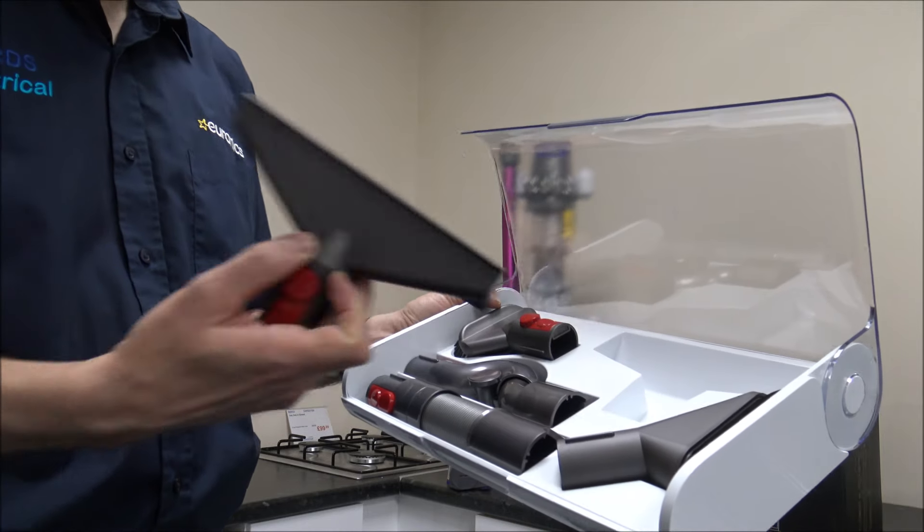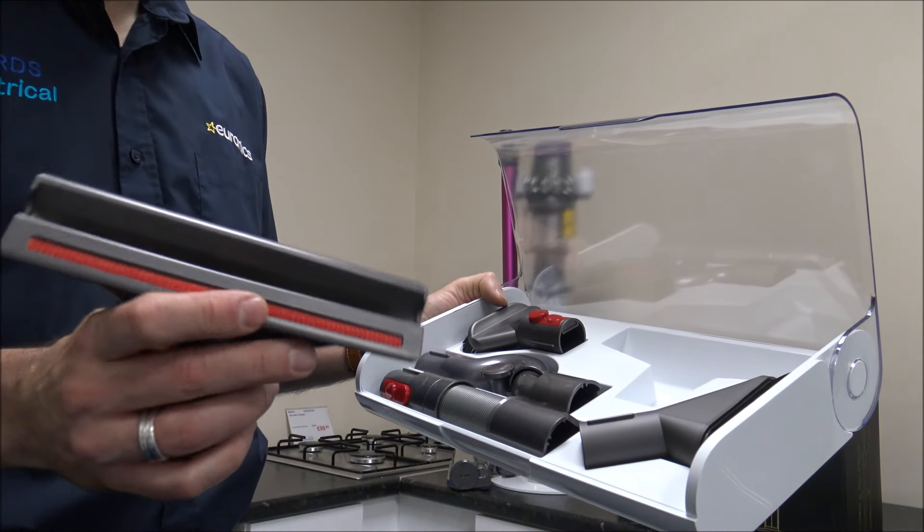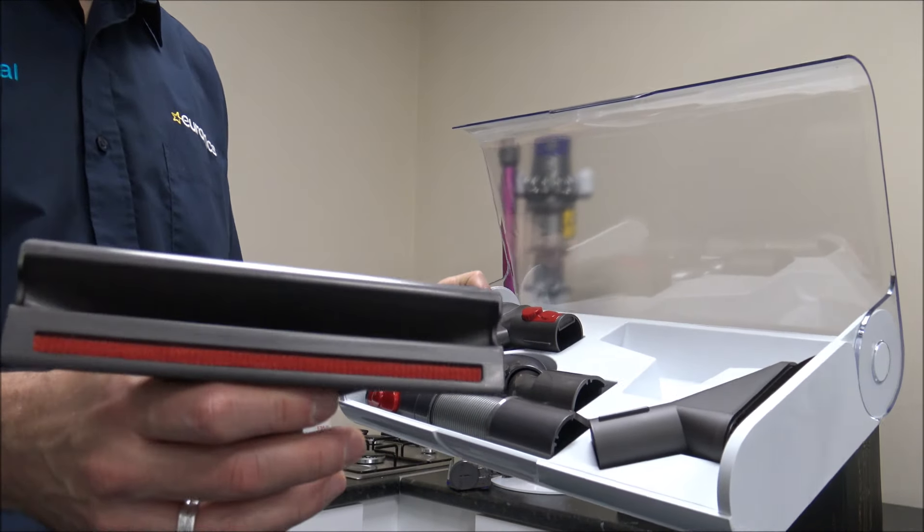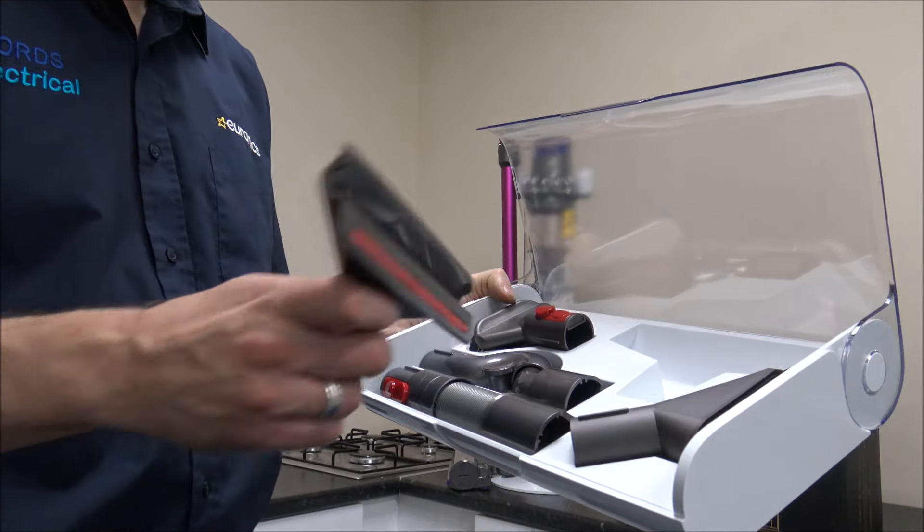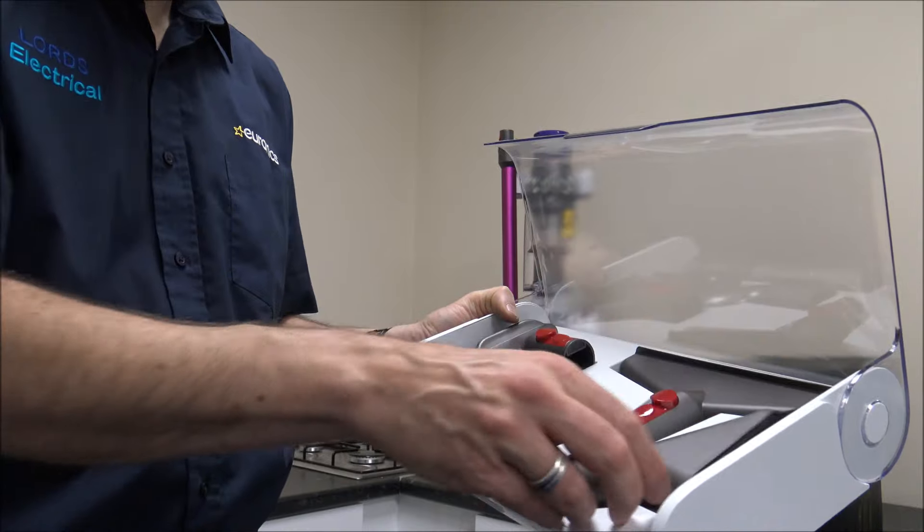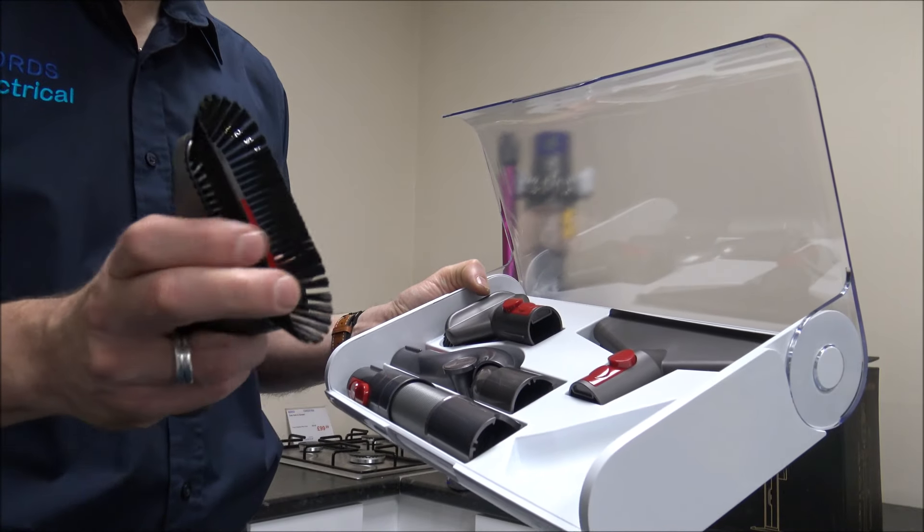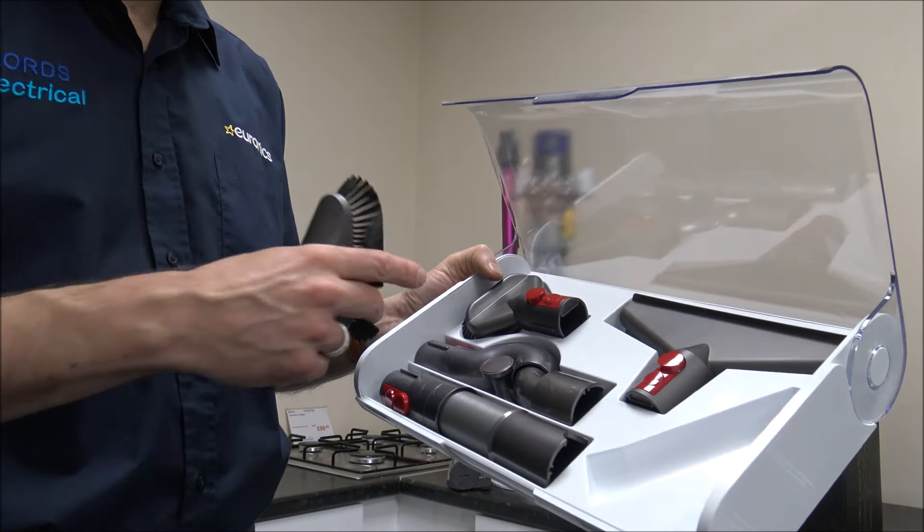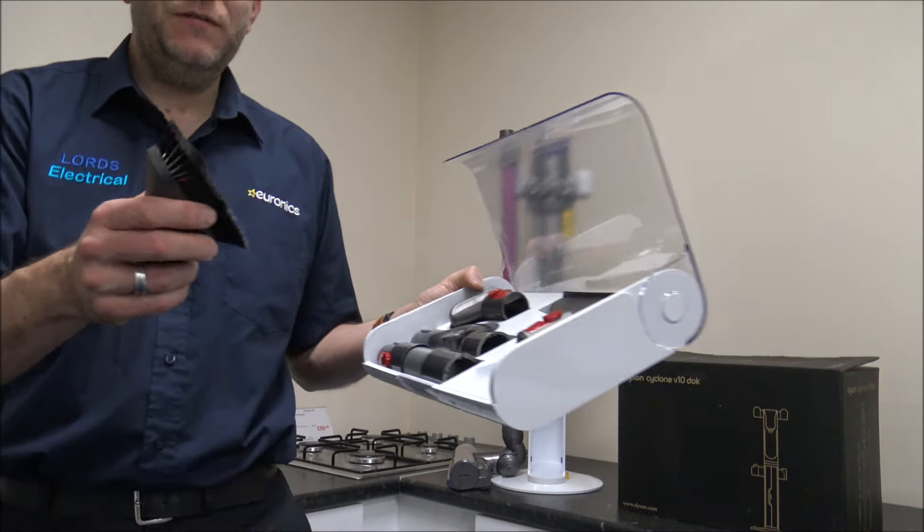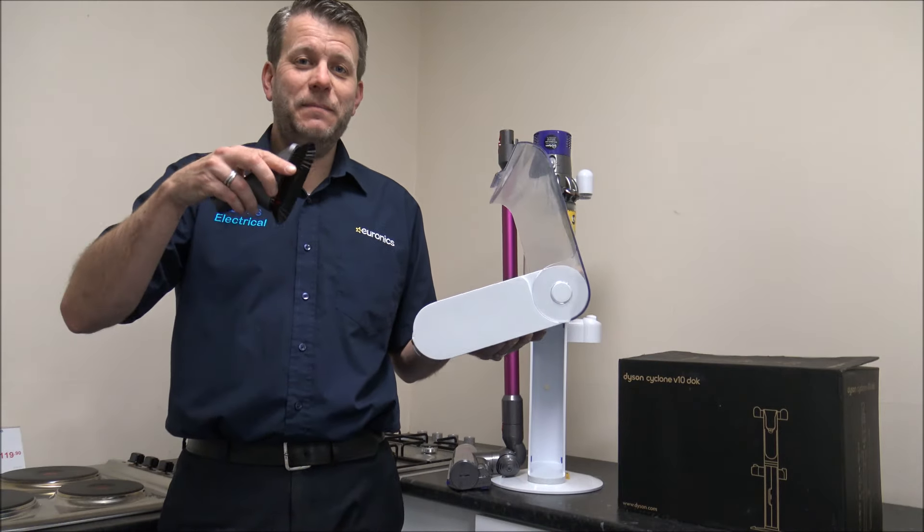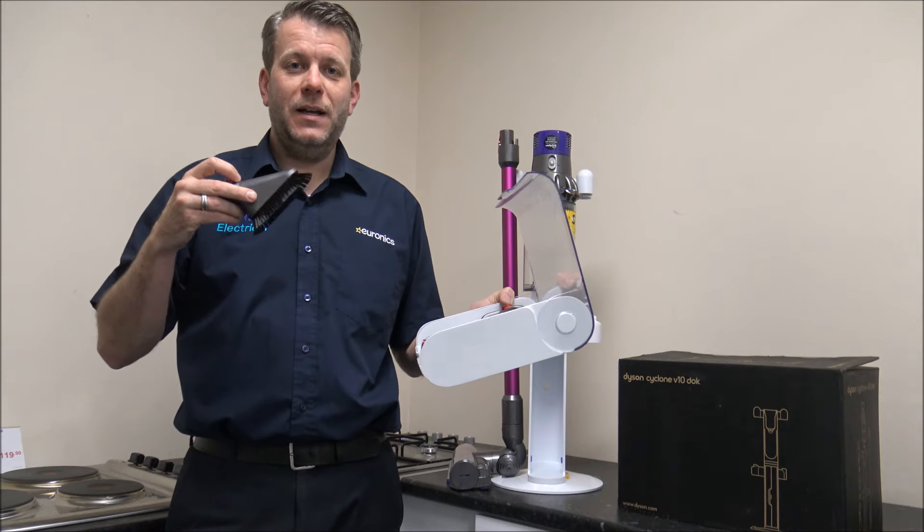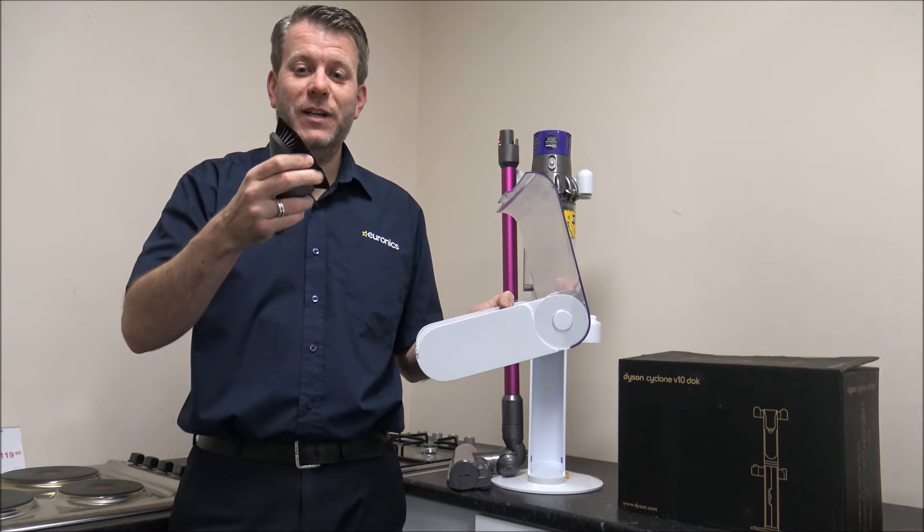Then you've got this wide nozzle here. It's sometimes referred to as a mattress tool. That's quite a good one because it's pretty wide. If you're covering a large area when you're using the vacuum as a handheld, then that's normally quite a good one to use. This one here, this is a soft dusting brush. So it's almost opposite to the stubborn dirt brush. This soft dusting brush is normally a good one for, if you're in your kitchen and if you wanted to go around your hob, or if you want to do your computer keyboard, then that's normally a really good one.